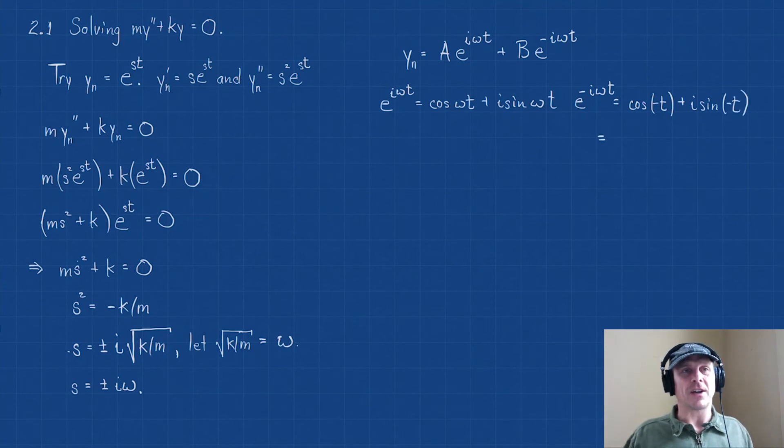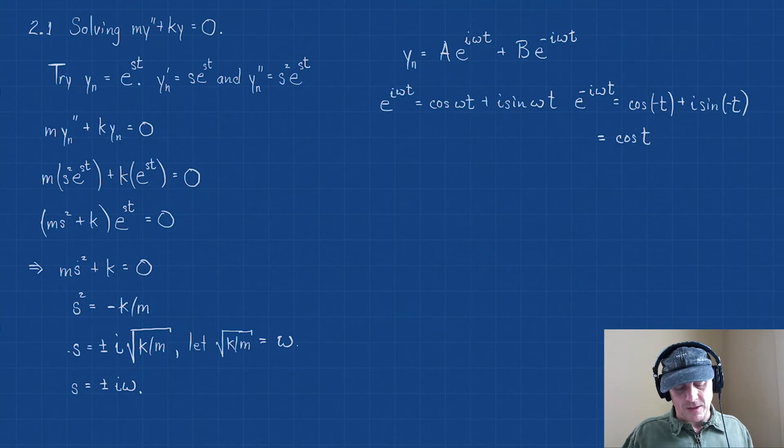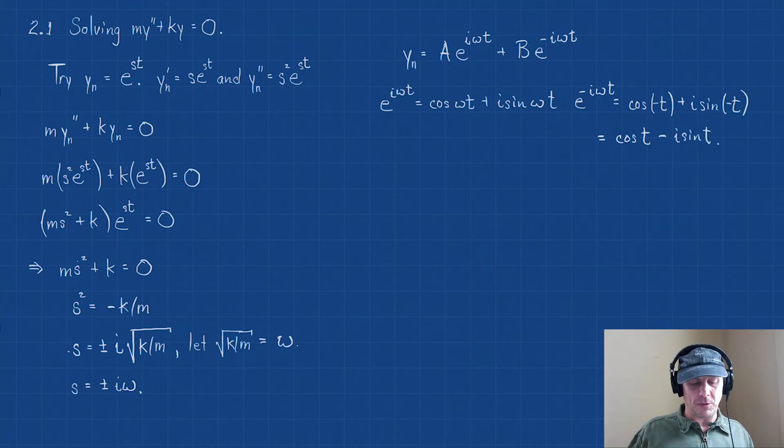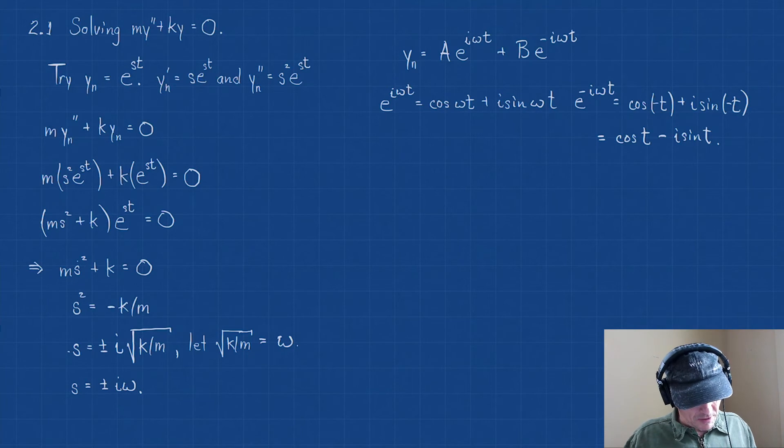And then, but the cosine of negative t, because cosine is an even function, this is the same as cos(t). Sine is an odd function. It has that property that this becomes -i·sin(t). Alright, let's make our substitutions now. So now I can rewrite this as y.